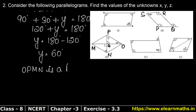OMNP is a parallelogram, and in a parallelogram opposite sides are parallel. So OP is parallel to MN, and MP is parallel to NO. Right.